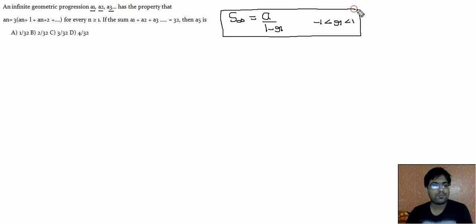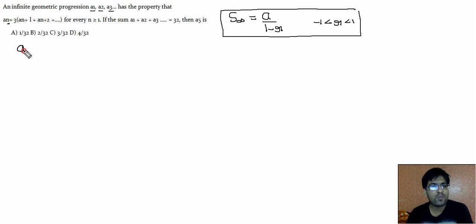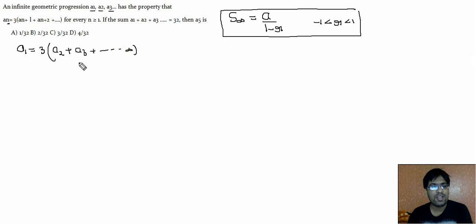The infinite GP has the property that a_n equals three times of (a_{n+1} + a_{n+2} + ...) and so on. If you put n equal to 1, you get a1 equal to three times of (a2 + a3 + ... till infinity). This means you can find the value of a1 from this relation.